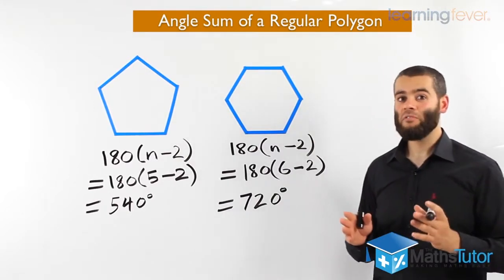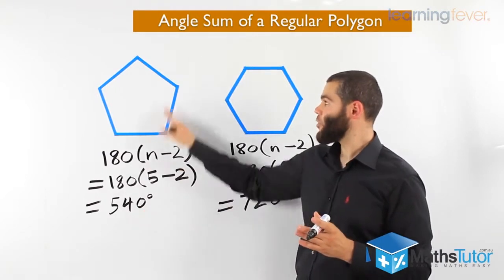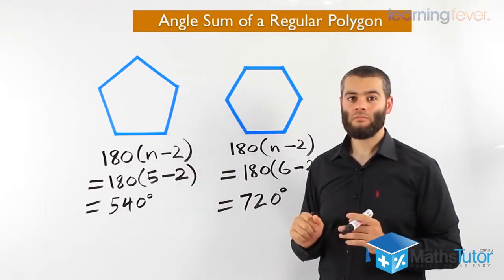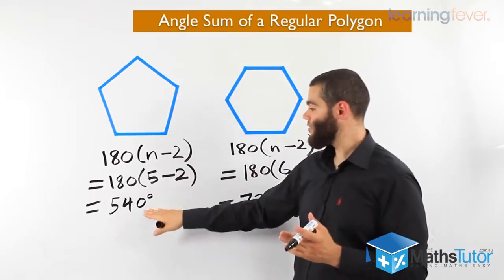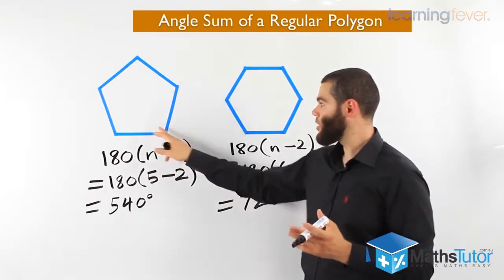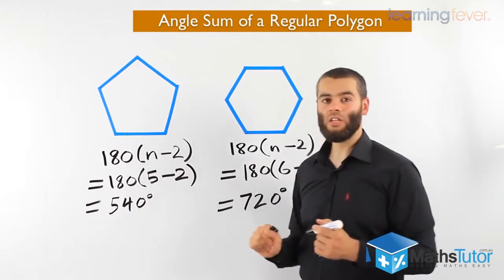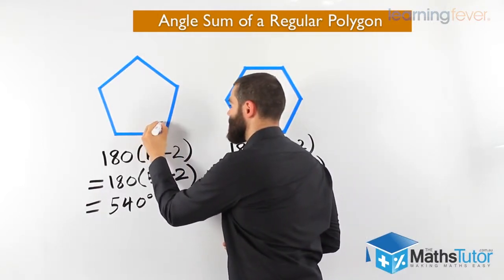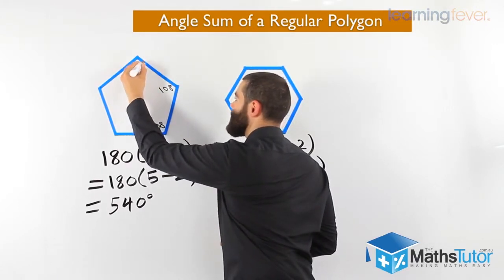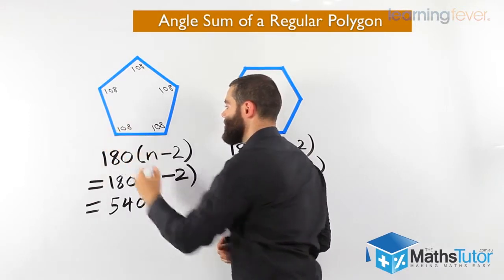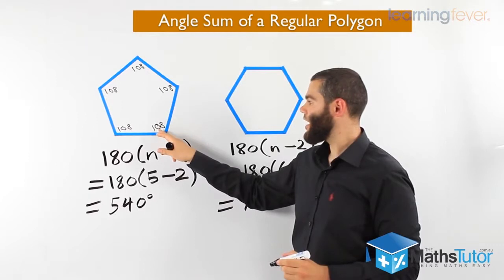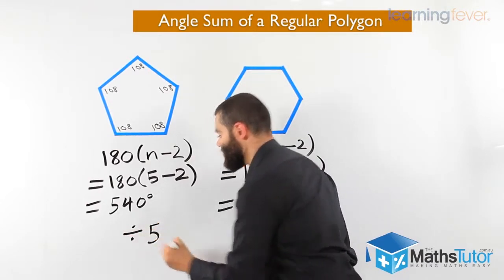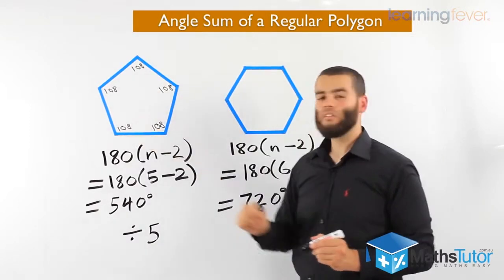Now let's go a step further. Sometimes you'll be asked: the angle sum for a pentagon is 540, but what is the size of just one angle? Since we know 540 is the total and we want one angle, we work it out as 540 divided by 5 angles, and we find that each angle is 108 degrees.